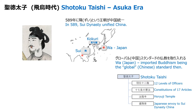In 589, the Sui dynasty unified China and was very strong. Sui and Goguryeo were enemies of each other. Japan was called Wa at that time, and because Sui was very strong, Wa needed to prevent Sui from invading Japan. So Wa prepared laws and a military to become stronger, and Japan imported many things from China because it was the global standard.